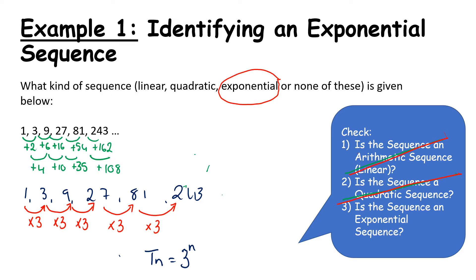Because 3 to the power of 1 would give me 3. But if you look here, my first term is actually 1. So I'd have to say, well, my second term is 3.